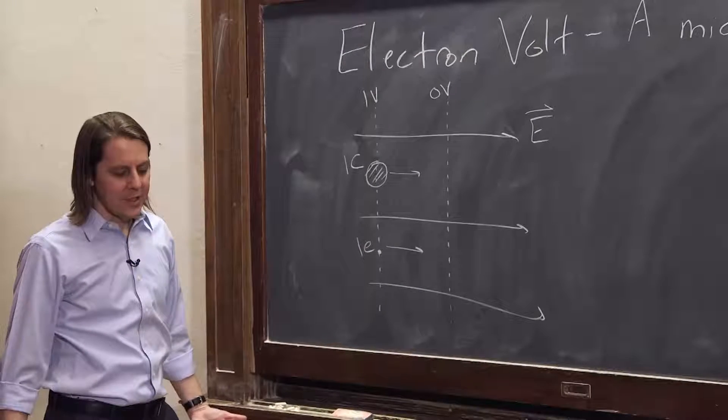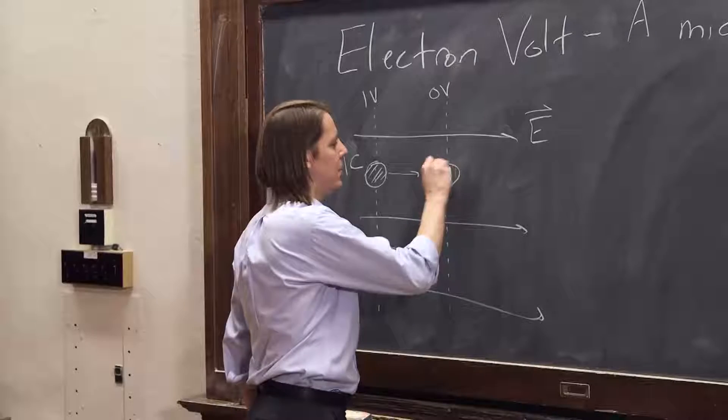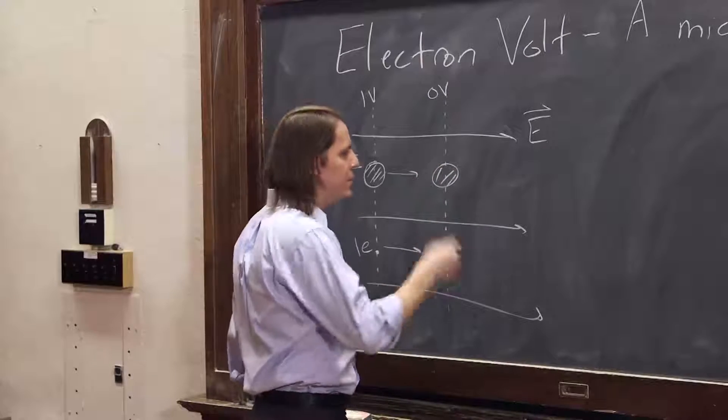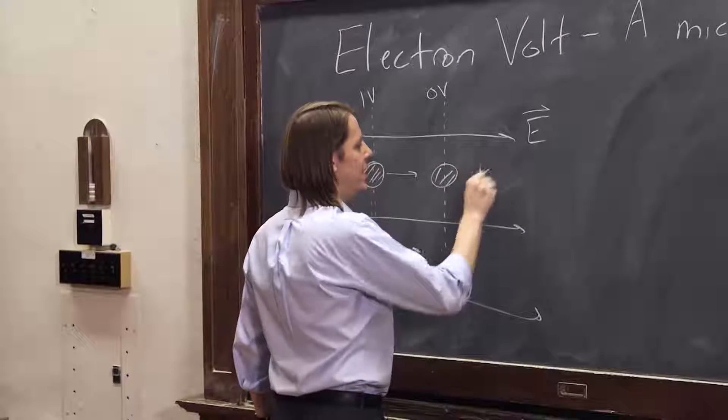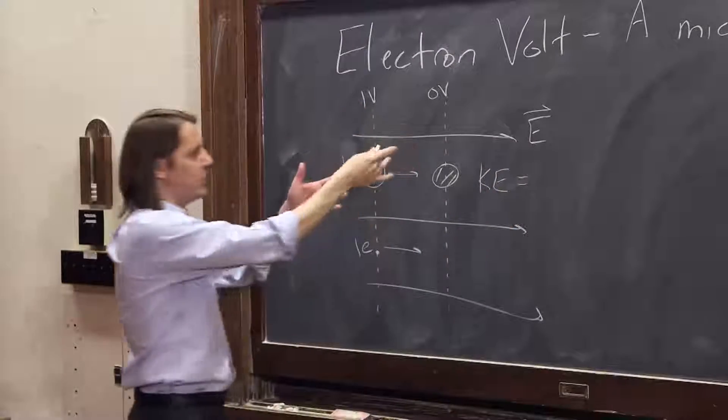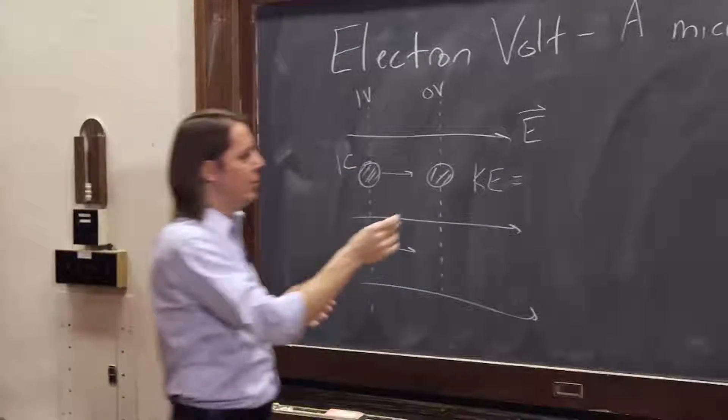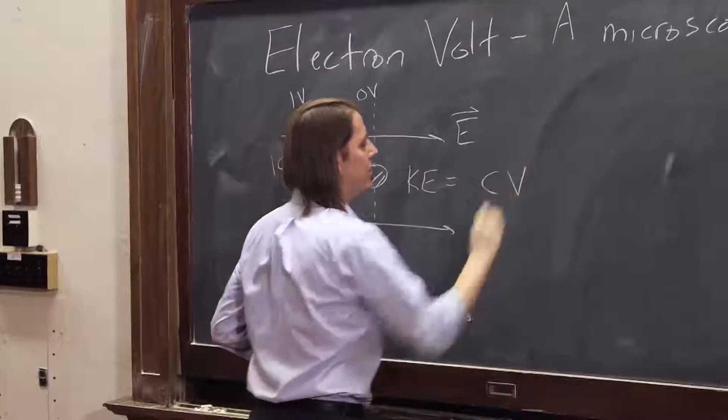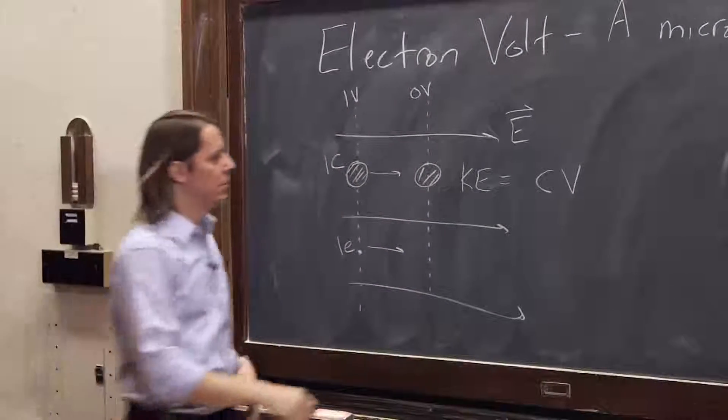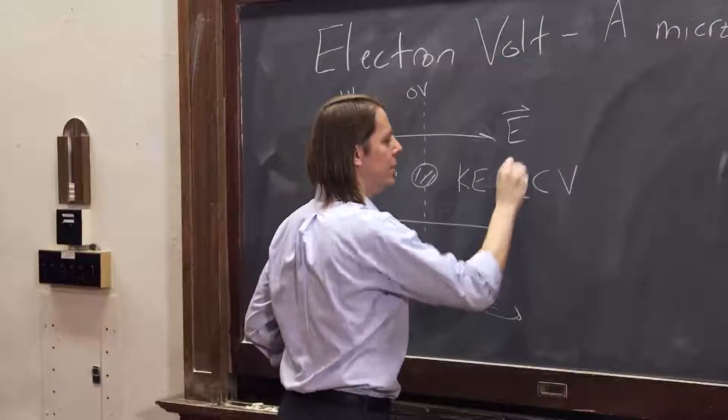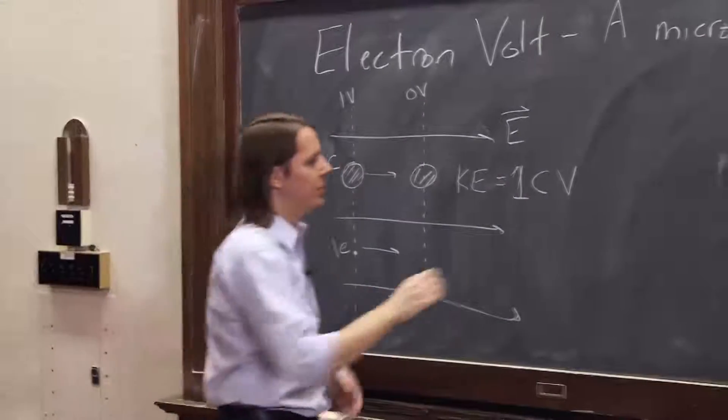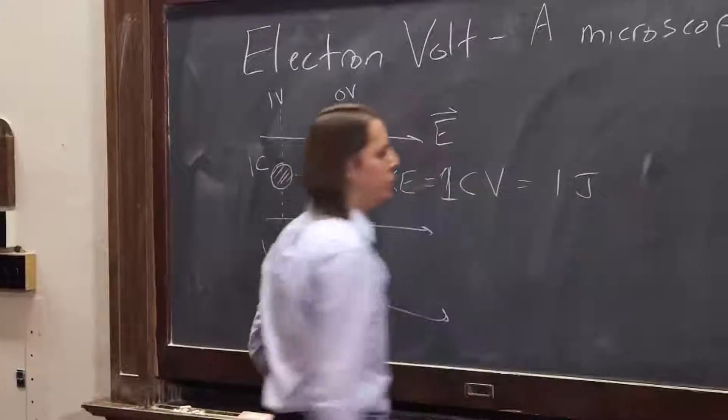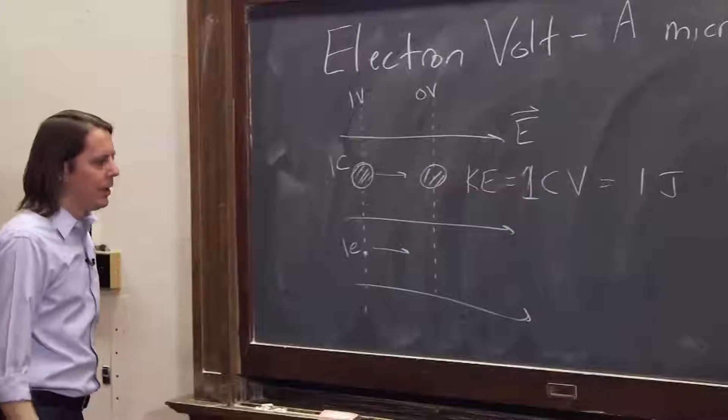So, we know how to calculate the energy when they get to here. The energy that they pick up would be the kinetic energy. It would just be the charge times a potential difference. It would be a Coulomb times a volt. It would be one CV, one Coulomb volt, which is what a joule is. That's equal to a joule.